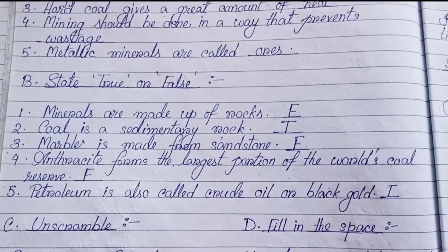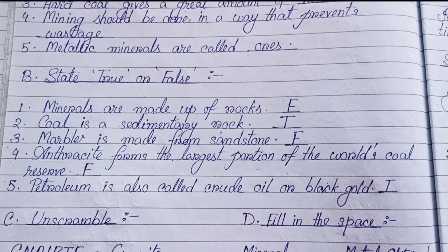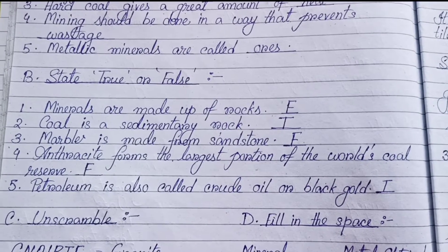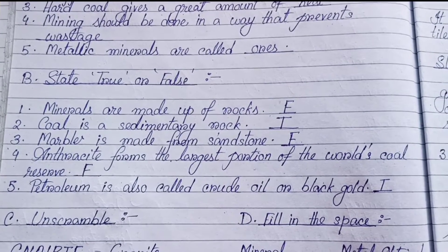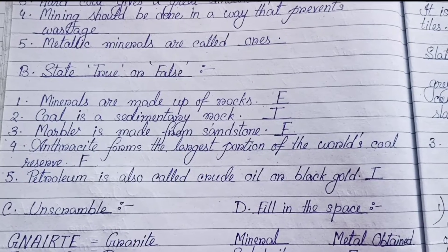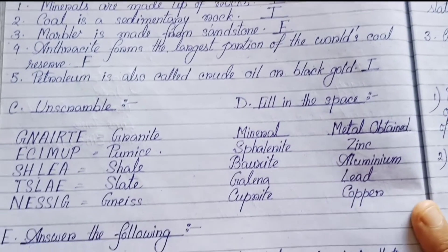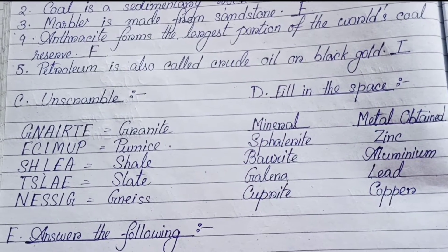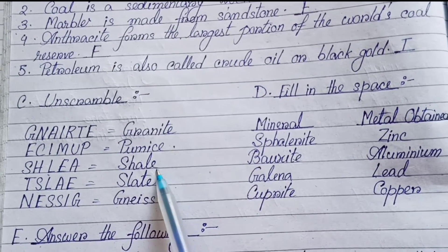State true or false: (1) Minerals are made up of rocks — False. (2) Coal is a sedimentary rock — True. (3) Marble is made from sandstone — False. (4) Anthracite forms the largest portion of the world's coal reserve — False. (5) Petroleum is also called crude oil or black gold — True.